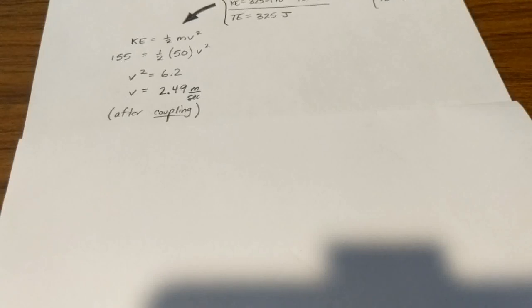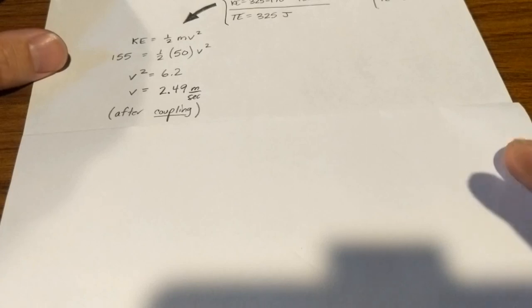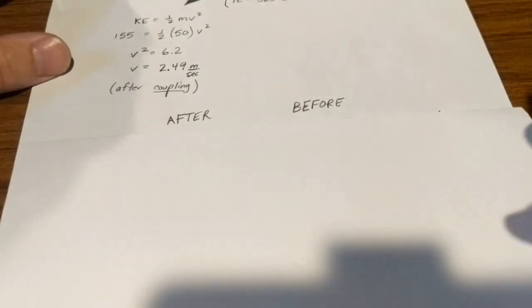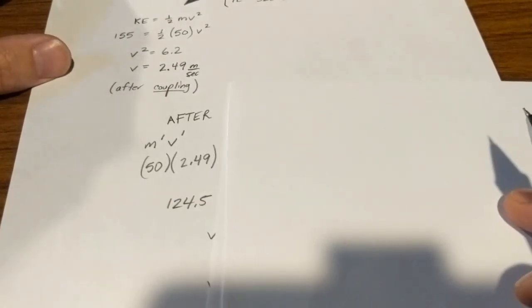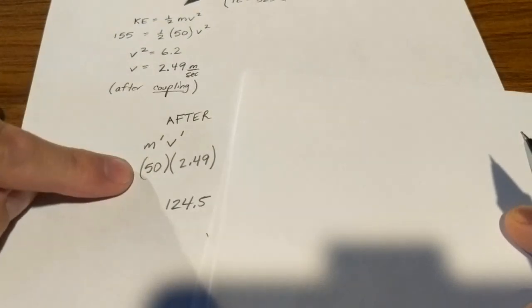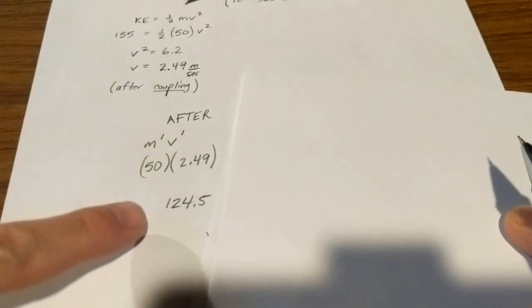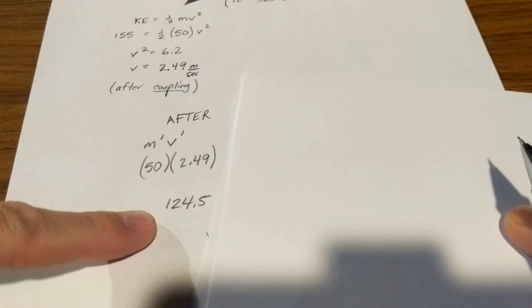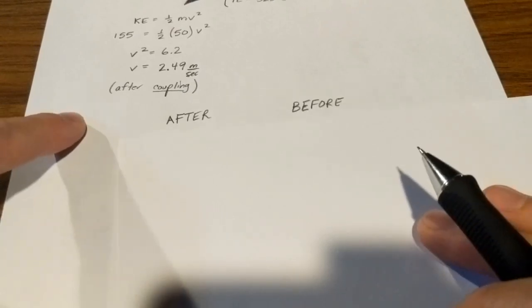The speed of about 2.5 meters per second after coupling is the end of what we can calculate by analyzing the energy in the situation. Now we're going to look at the interaction portion or phase of what was going on by calculating momentum. So there's an after momentum that we know first, actually, and a before momentum for this interaction. The after momentum is that my son and the swing with the weights on it, with their mass of 50, had a velocity of 2.49. That means that the momentum after the coupling was 124.5. But because momentum is conserved, the momentum before the coupling has to match that.